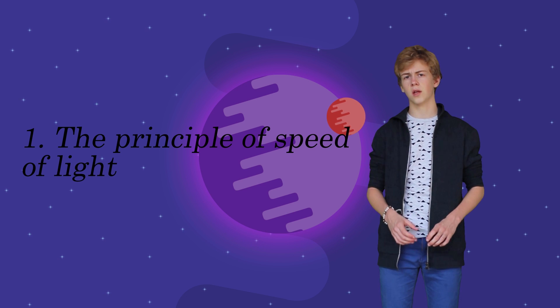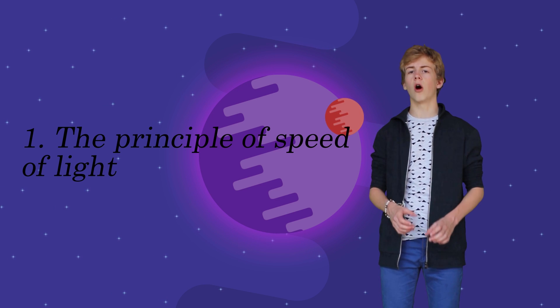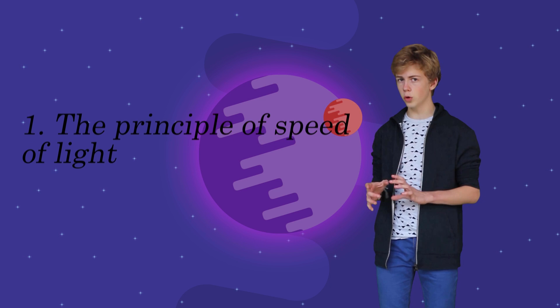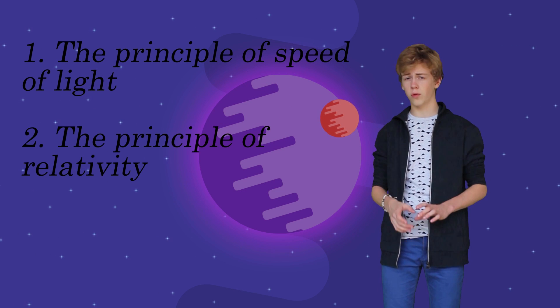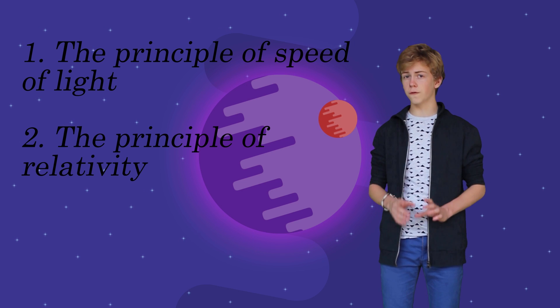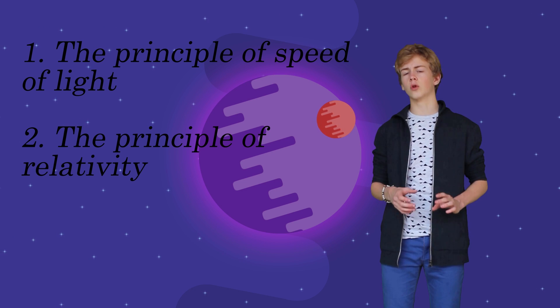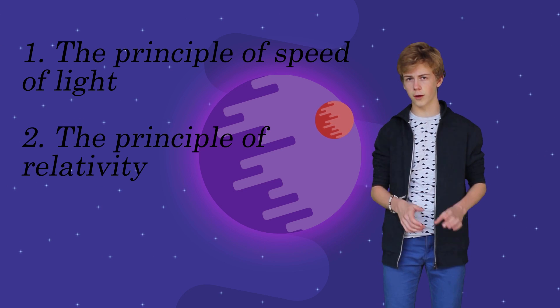Einstein's theory of special relativity is based on two key principles. First, the principle of speed of light: the speed of light is the same for all observers regardless of their motion relative to the light source. Second, the principle of relativity: the laws of physics don't change even for those moving in inertial frames of reference.